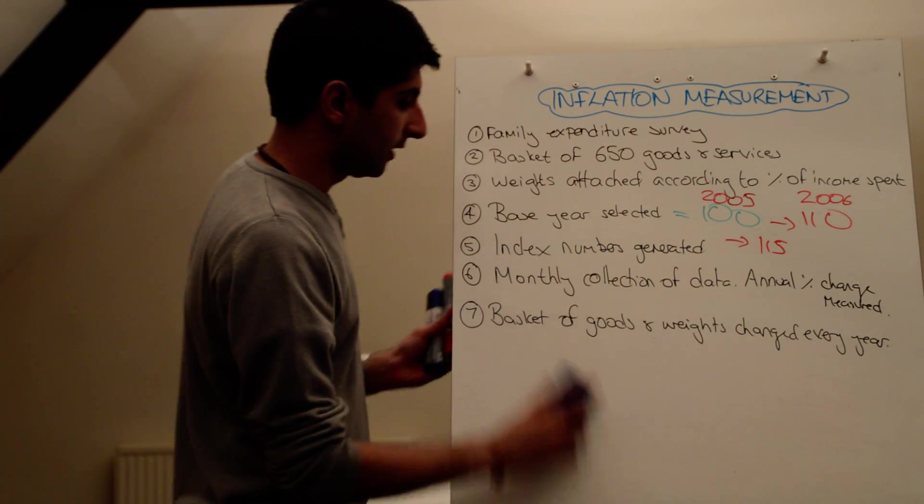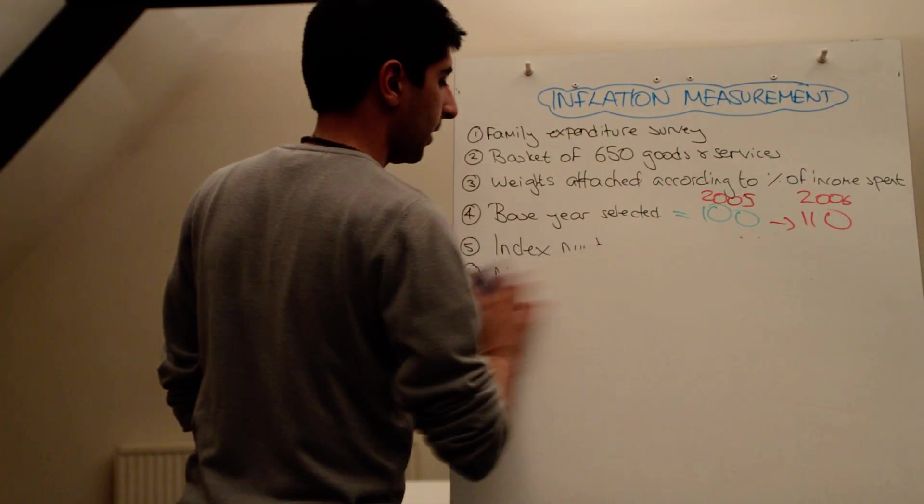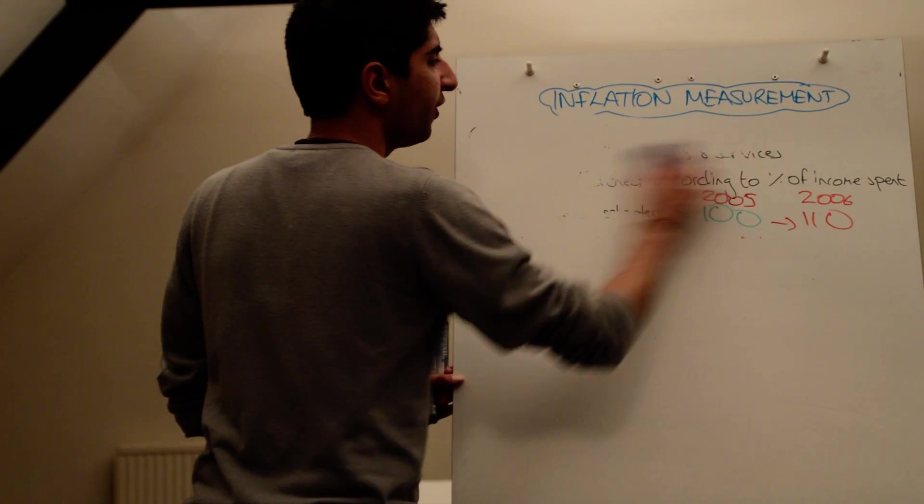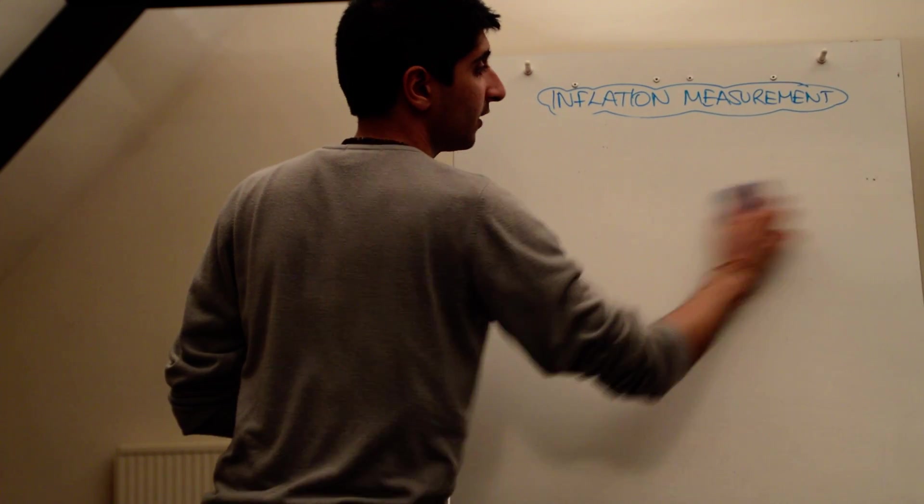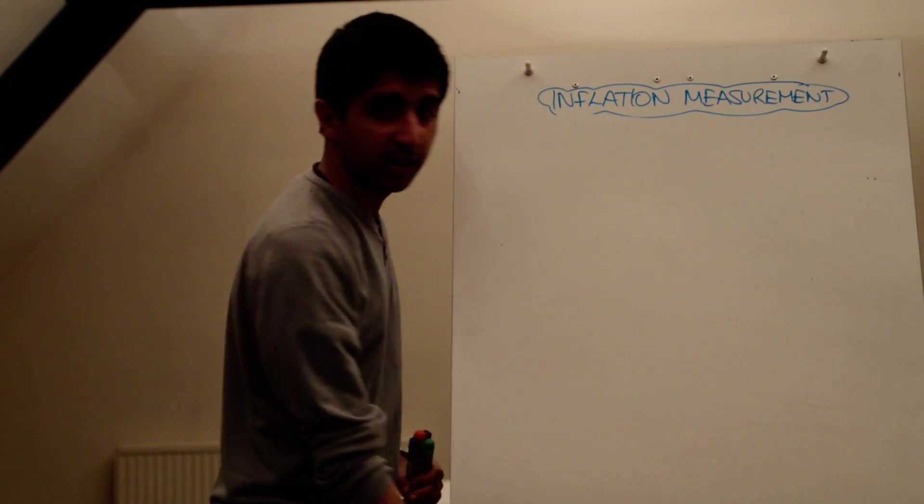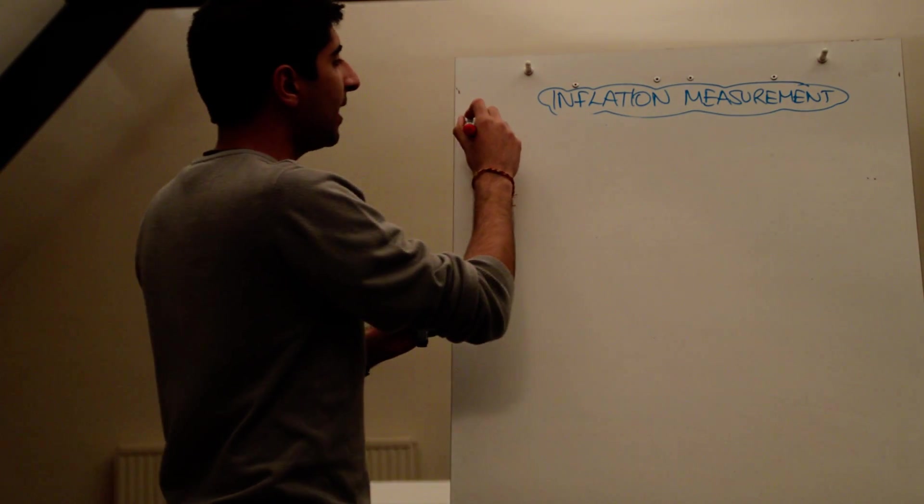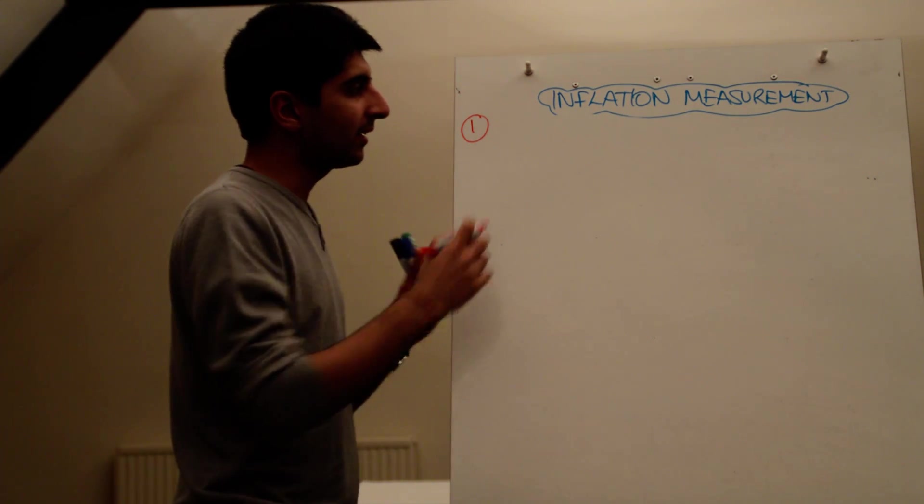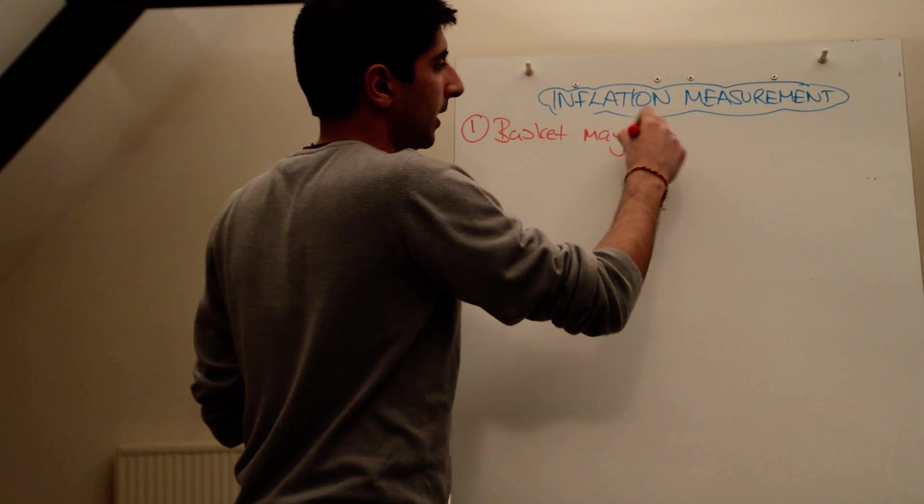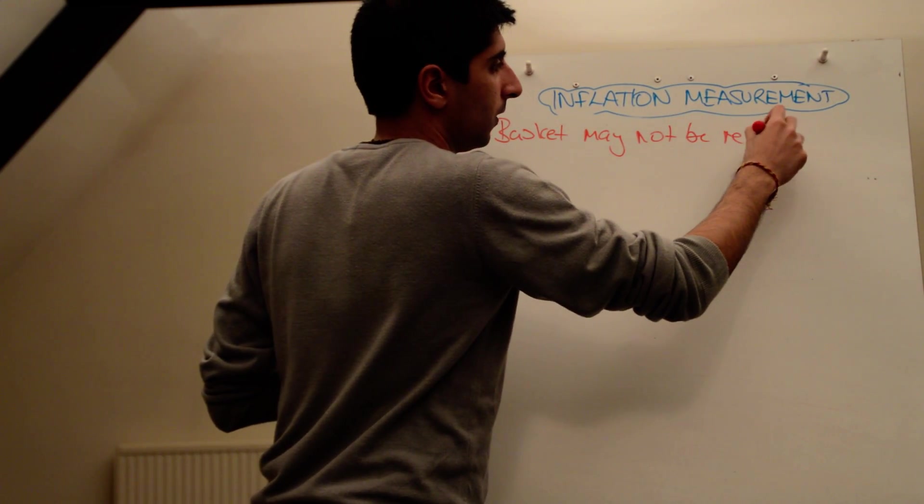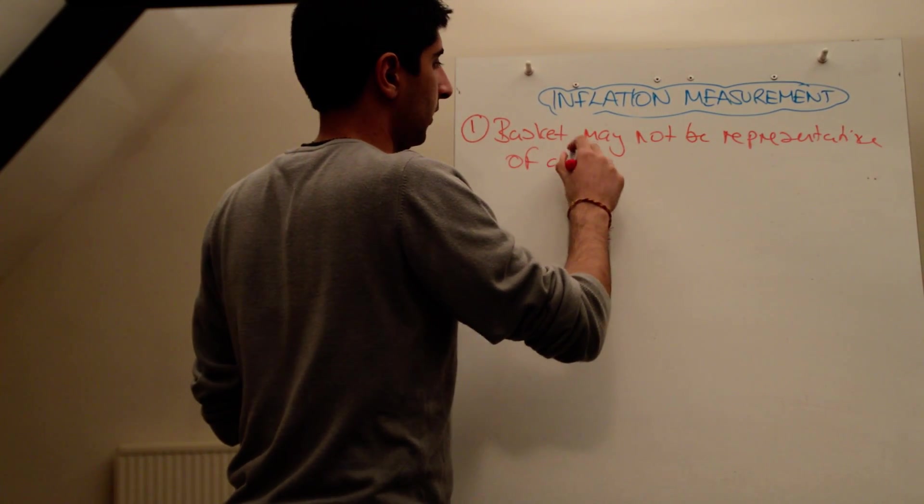But there are problems with using CPI. There are some significant problems which you need to know at the same time. So one thing we might be learning now is that no measurement is ever perfect. For whatever indicator it might be, growth, unemployment, inflation, whatever, they've all got flaws, and they're all very important for you to understand. So one of the main flaws of inflation and the main problems is that the basket may not be representative of all consumers in the economy. And that's important.